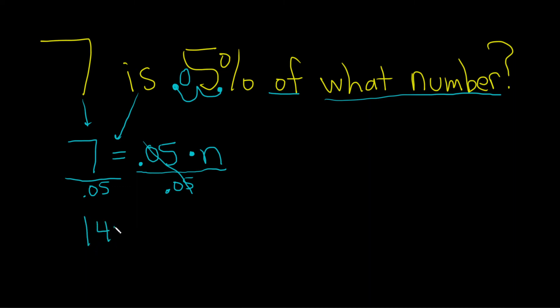Big number. And that's equal to n. Most of the time, we put the variable on the left. So let's do that. So n is equal to 140. And that would be the final answer. Let's go ahead and read it back together. 7 is 5% of 140.